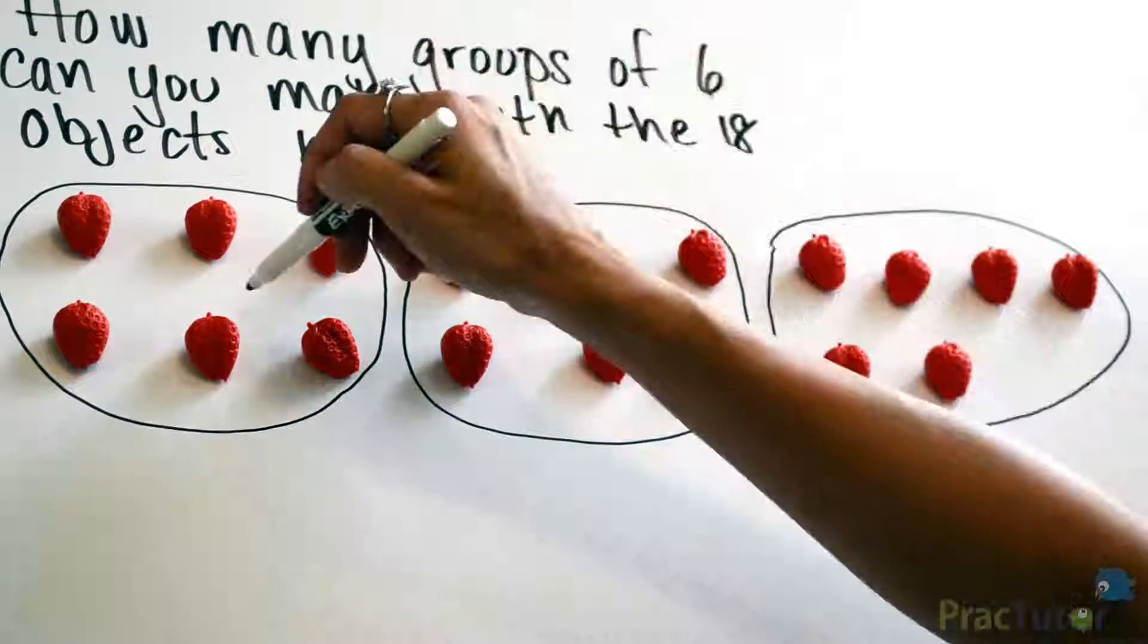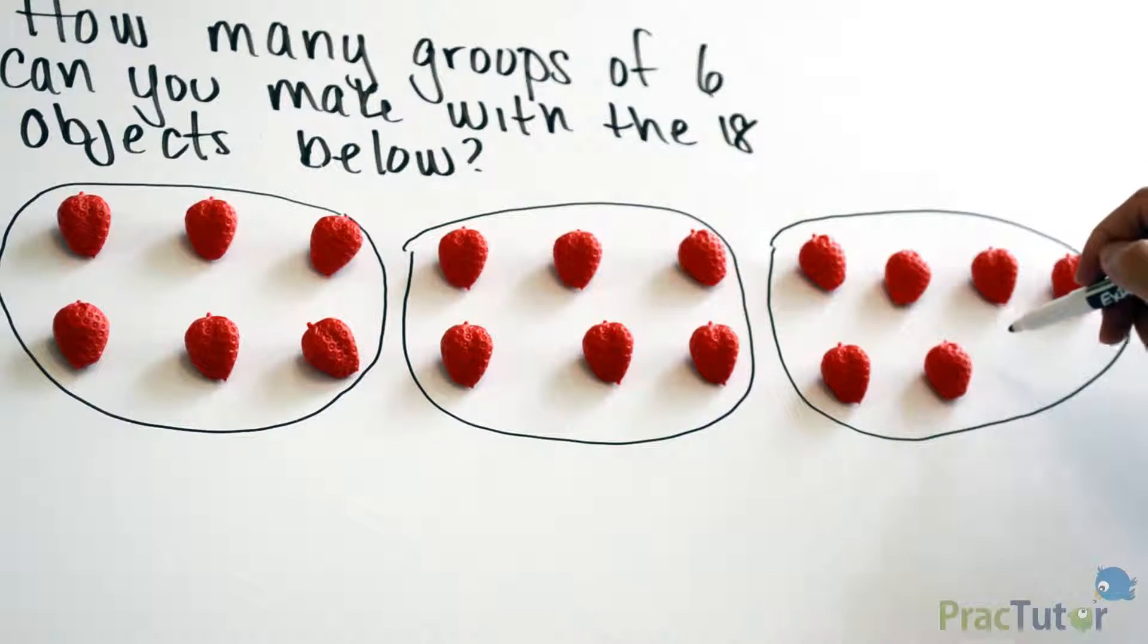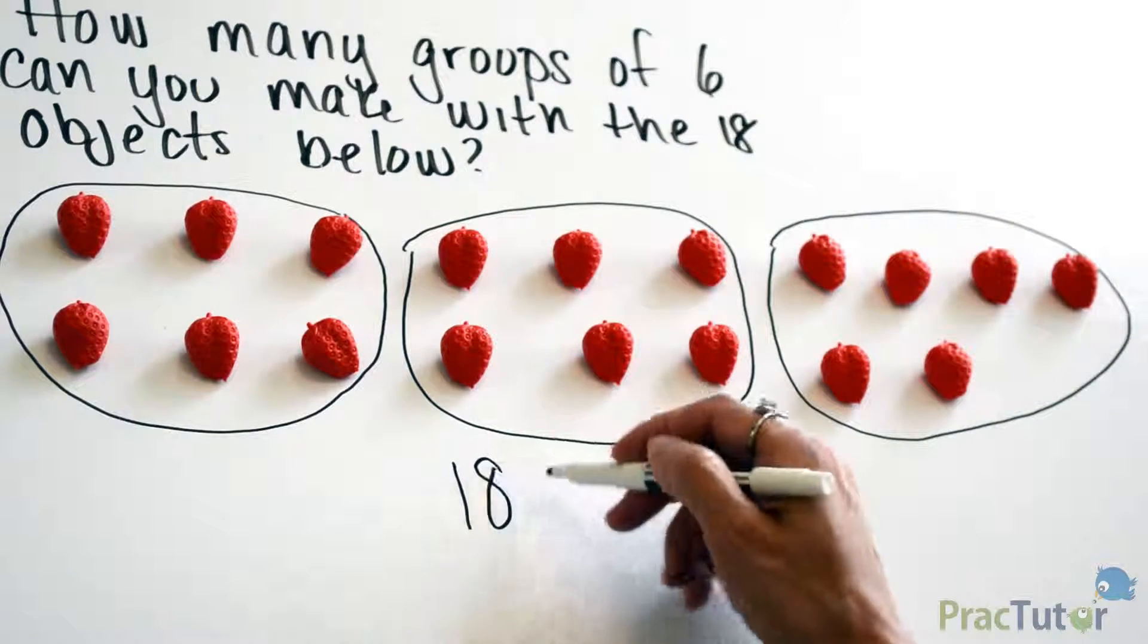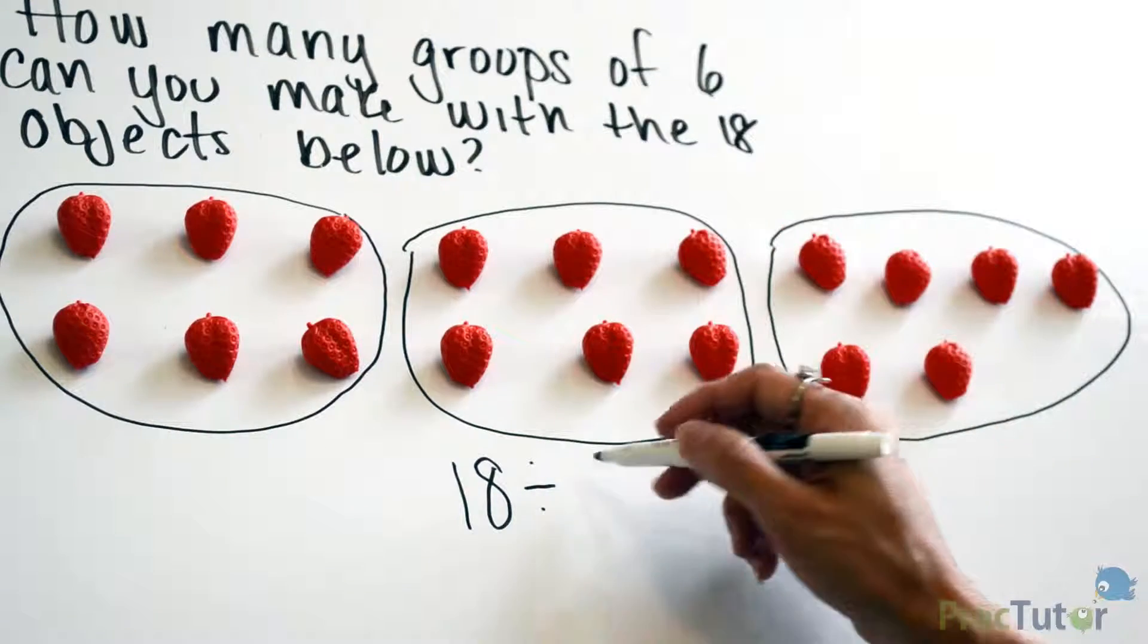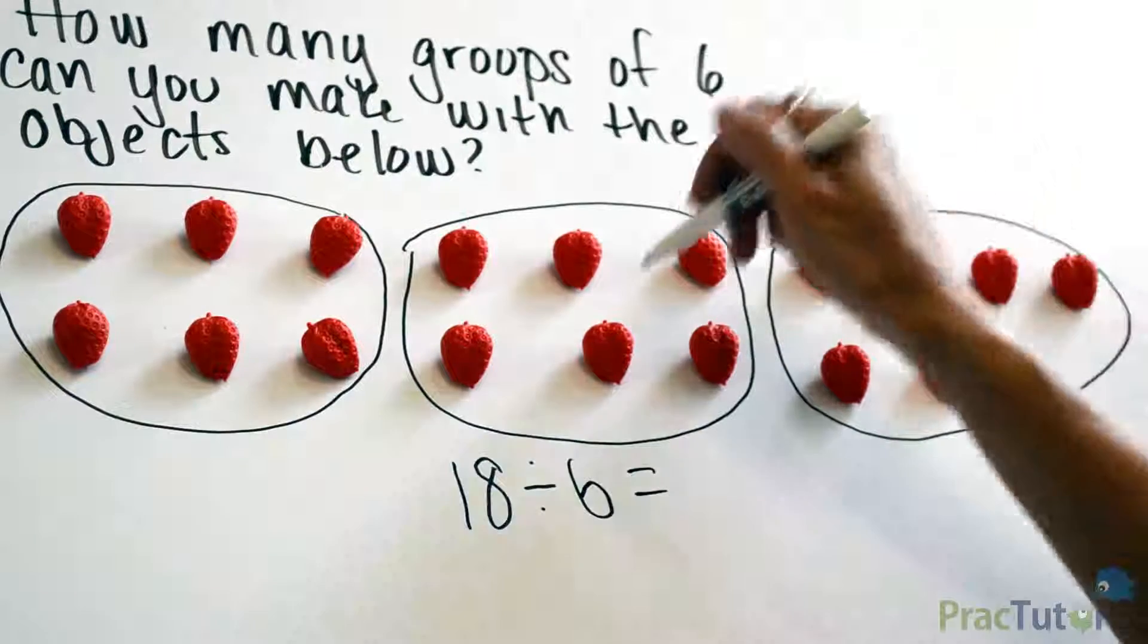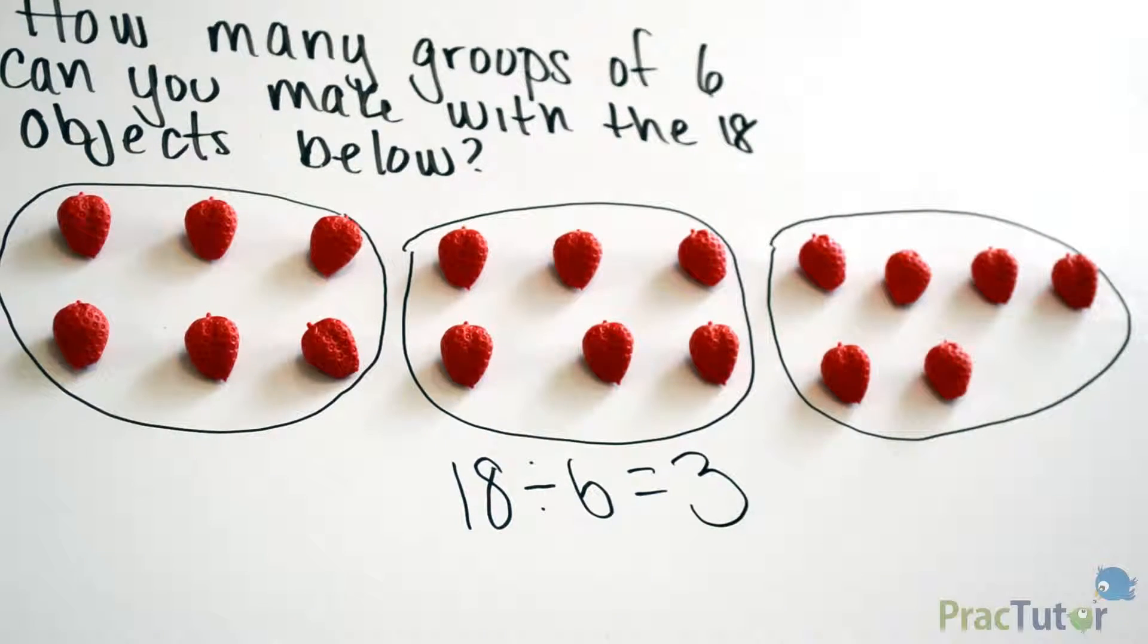So we have 1, 2, 3 groups of 6. So our total number of objects was 18. We divided our 18 by 6, and we got 3 groups of 6. Our quotient is 3.